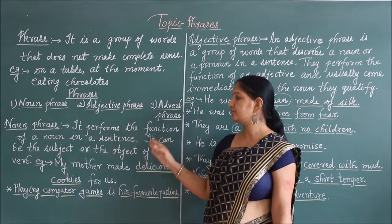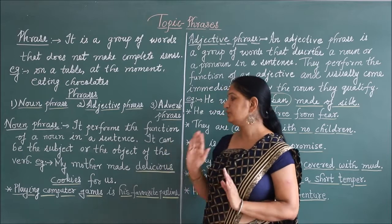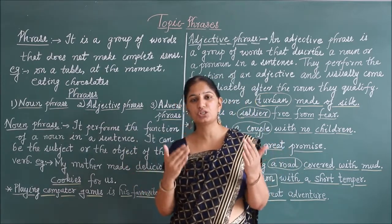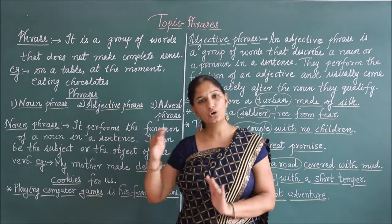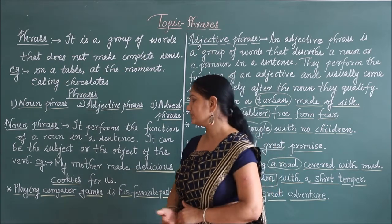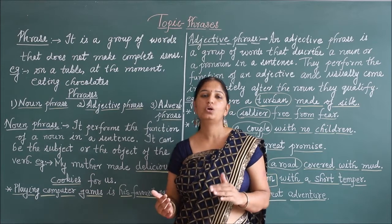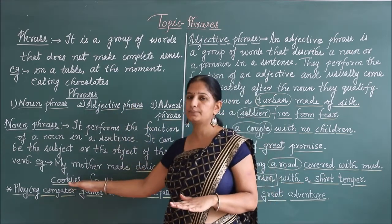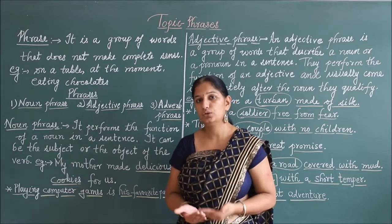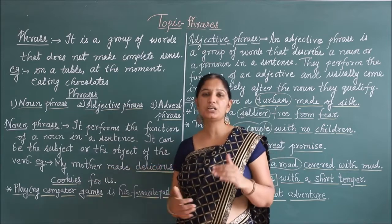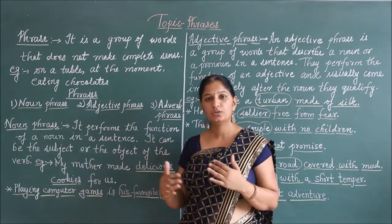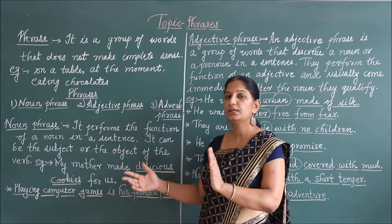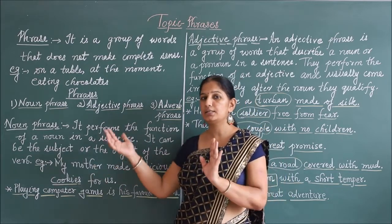Noun phrase: it performs the function of a noun in a sentence. It can be the subject of the verb or the object of the verb. As we know, in the place of subject and object we always find nouns or pronouns. Let us see an example: 'My mother made delicious cookies.' If we ask the question from the verb — 'My mother made what?' — we get the answer 'delicious cookies.' What answers the question 'what' in a sentence? The object. So 'delicious cookies' becomes an object, and since the object is a noun, it becomes a noun phrase.